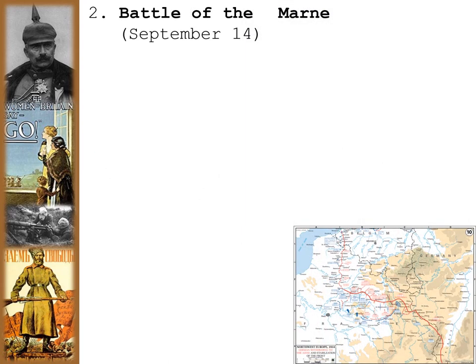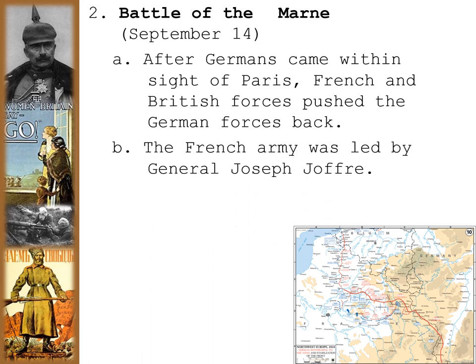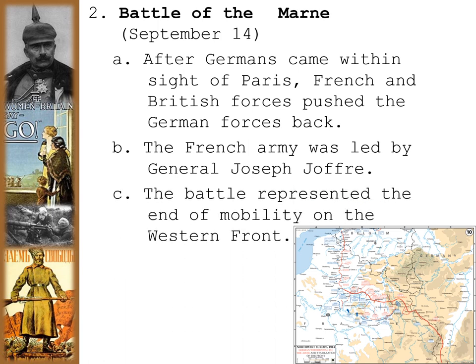By September 14th, 1914, the Western Front lines became entrenched along the Marne River — a natural dividing line between France and Germany. After the Germans came within sight of Paris, French and British forces started to push the German forces back to the Marne River. The French army was led by General Joseph Joffre, and the Battle of the Marne represented the end of mobility on the Western Front, especially for Germany. Germany had to entrench itself and could not knock France out in the 42-day timetable of the Schlieffen Plan.